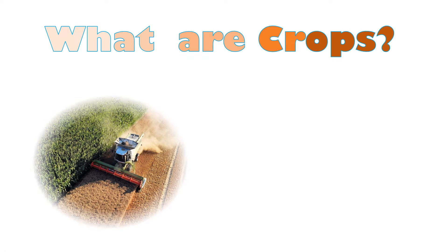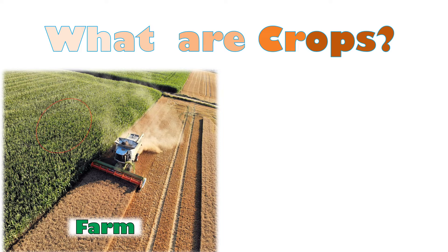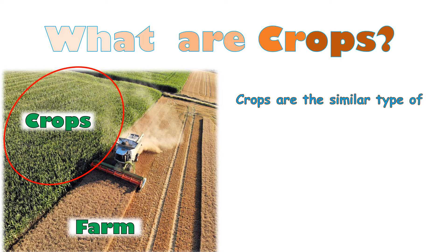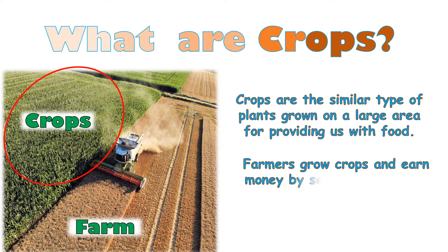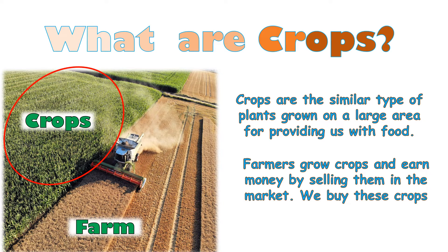Have you seen a farm where on a wide area a large number of similar types of plants are grown? These plants are known as crops. So, crops are the similar type of plants grown on a large area for providing us with food. Farmers grow crops and earn money by selling them in the market. We buy these crops from the market to get food.